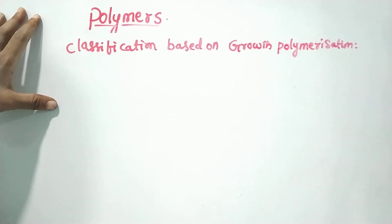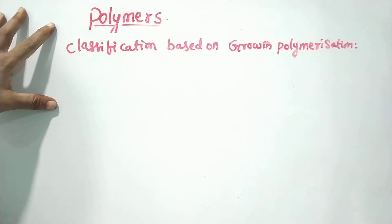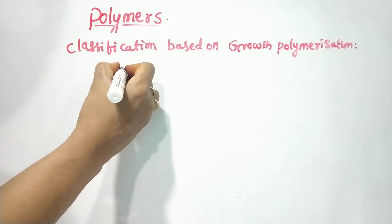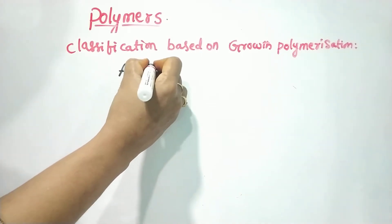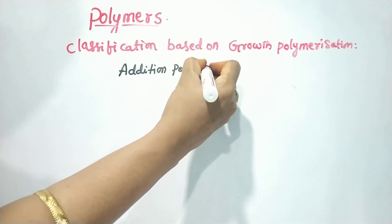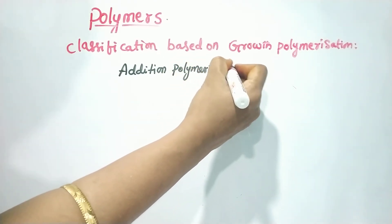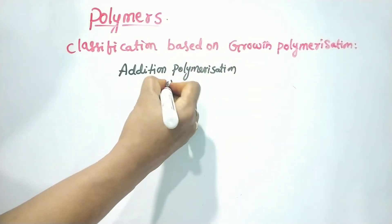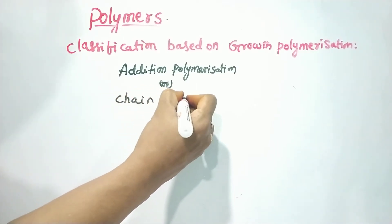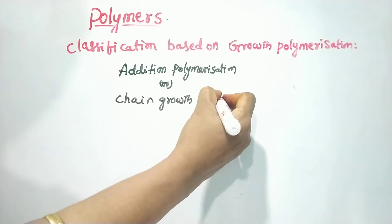We will use 3 types of classifications; this is the fourth type. We will do this classification based on growth polymerization. We have two types: addition polymerization, also called chain growth polymerization, is the first one.